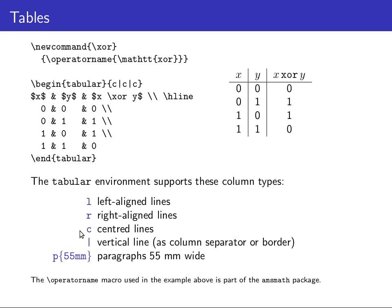The tabular environment has a couple more capabilities. In particular, you can separate rows and columns with lines. If you want to separate two columns with a line, you put a vertical bar between the alignment specifications, and if you want to separate rows with a horizontal line, you write backslash hline after the end of that row.